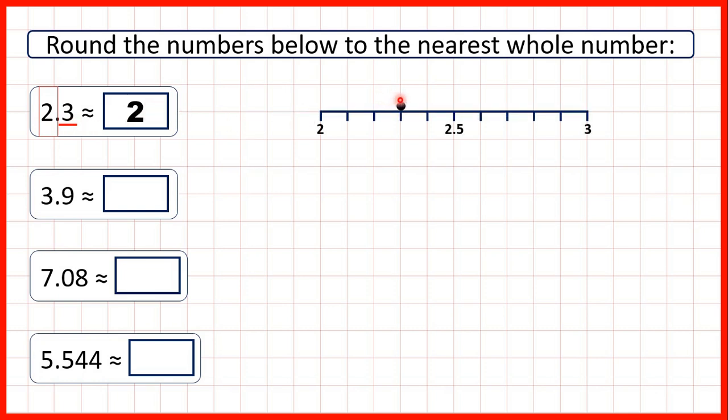And we can see on a number line that 2.3 is between the whole numbers 2 and 3. But it's closer to 2, so we round down to 2.